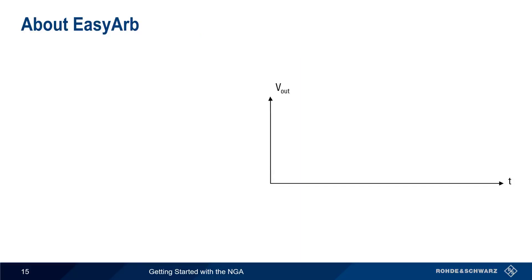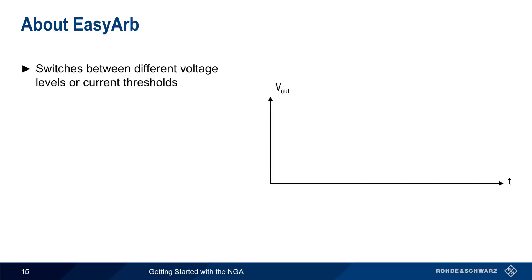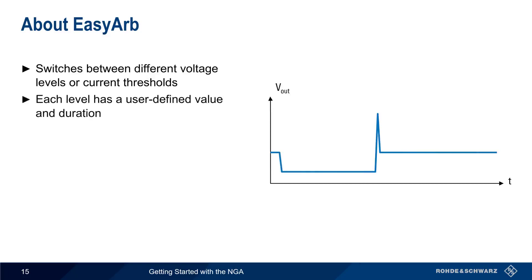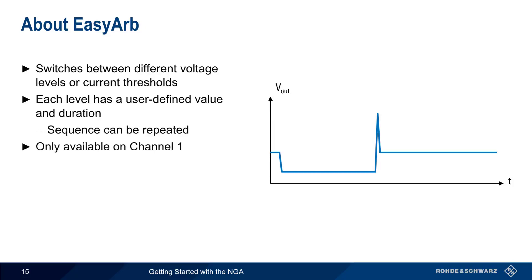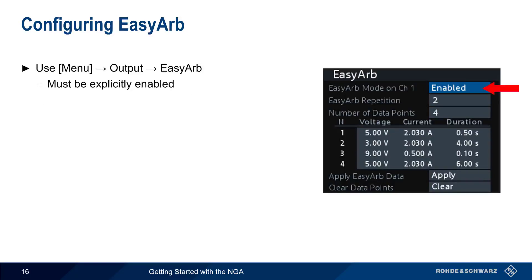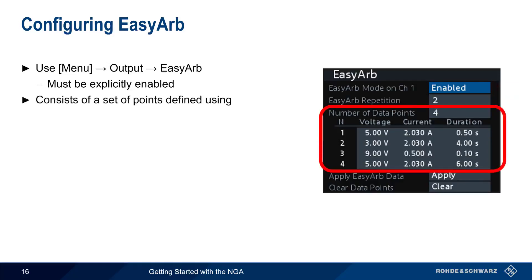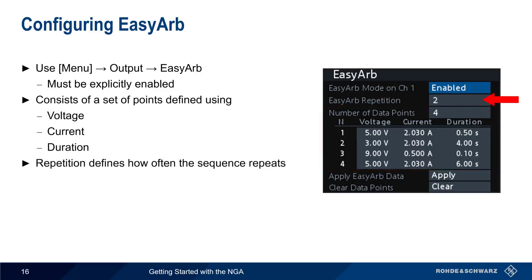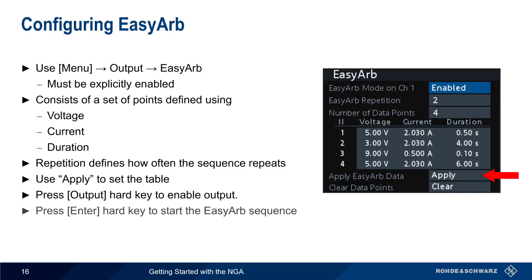Unlike EZRAMP, which linearly increases voltage from zero to a defined value, EZARB switches the NGA output between different discrete voltage levels or current thresholds. Each one of these levels has a user-defined value and duration, and the sequence can be repeated multiple times. Note that EZARB is only available on channel 1. To configure EZARB, press the menu hard key and then select output EZARB. Note that this function must be explicitly enabled. The EZARB sequence consists of a series of points, each defined as a voltage, current, and duration. This sequence of values can also be repeated multiple times. Once you've finished configuring these parameters, use apply to set the table. On the NGA front panel, press the output hard key to enable output, and then enter to start the sequence.